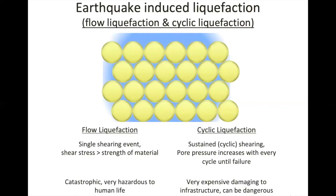But cyclic mobility can be extremely damaging to infrastructure. This cartoon is a good illustration of some of the main problems that come out of liquefaction. One is the flow and the unstable ground. Another is the subsidence. When the material eventually does subside and the water drains, it often drains up causing many problems to infrastructure.